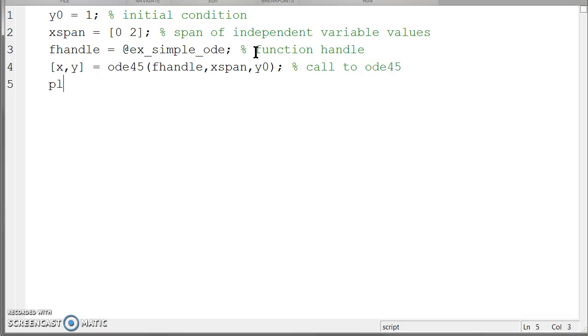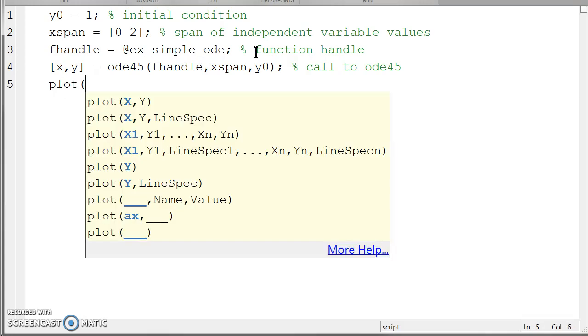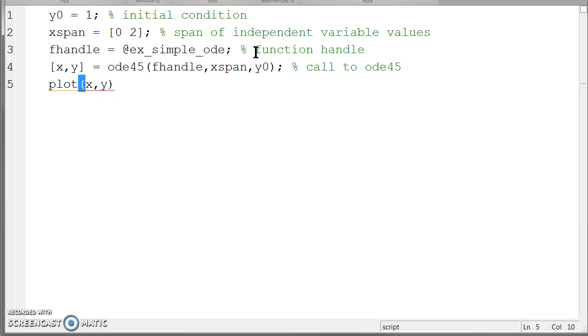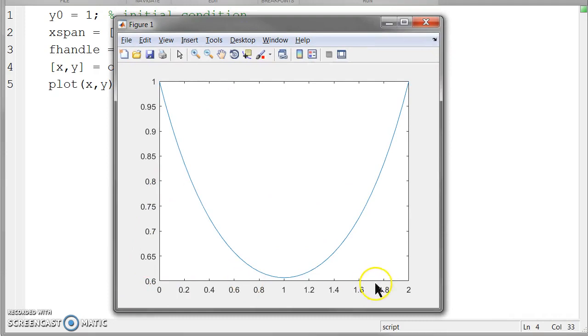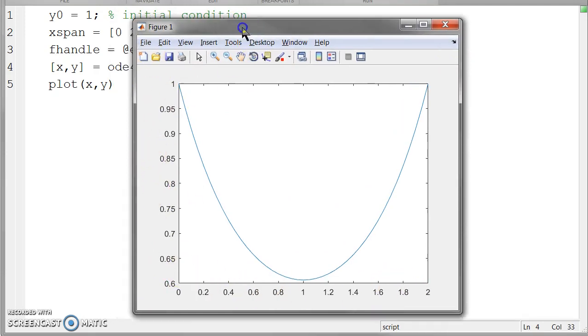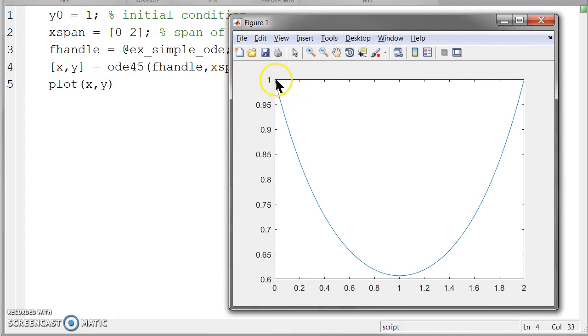Finally, what I'll do is I'll go ahead and plot x comma y to plot the solution here or what ODE 45 has found. Now I should be able to go ahead and just run this. And what I get is such a plot where on the x-axis I have x and the y-axis I have y. And so according to this ordinary differential equation, when you start at x equals 0 and y equals 1, then the differential equation takes on, or then the solution y of x, takes on this particular value.